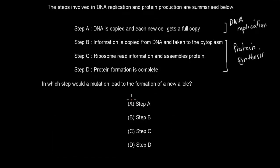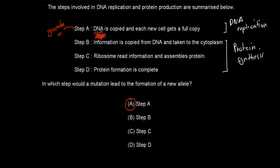Welcome back. The correct answer is A. A mutation leads to a new allele only if it occurs during DNA replication — that is, when the new gamete being formed has a different version of the allele or gene. Changes in the other steps won't affect the next generation. So A is correct and the others are false.